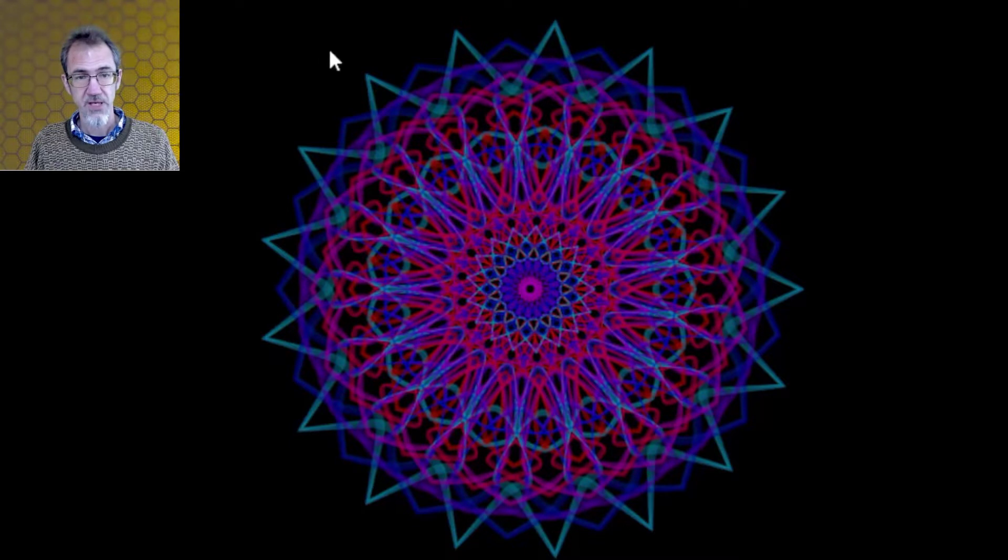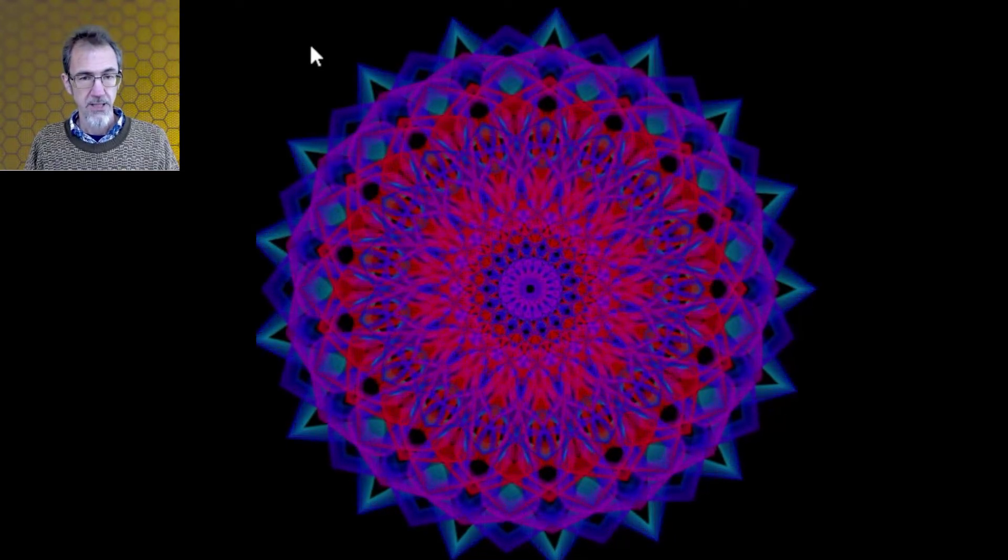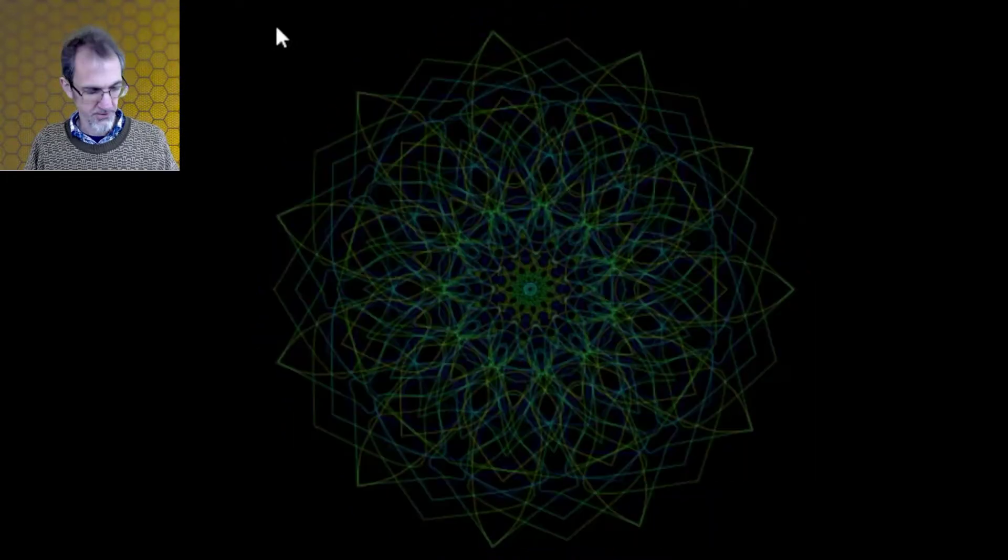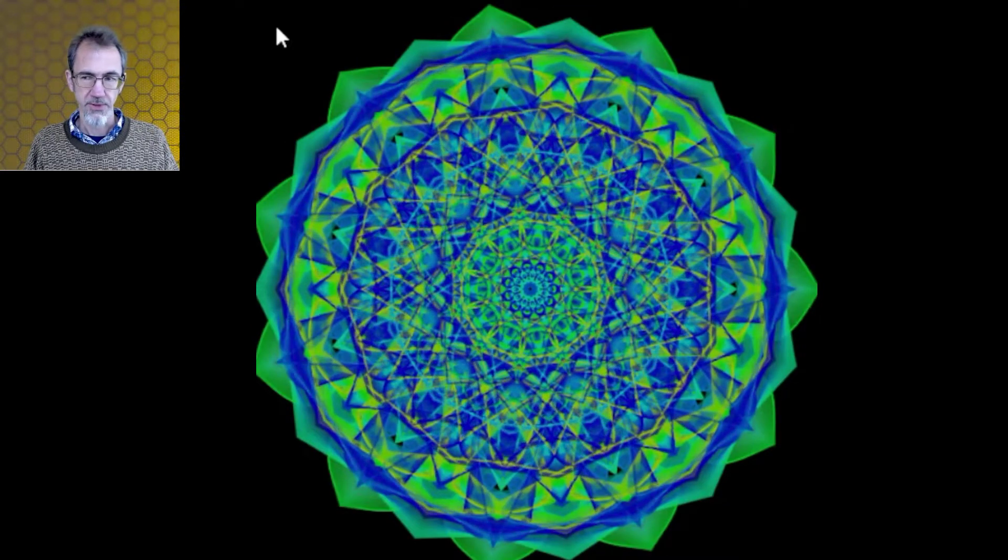And of course, as with the previous mandalas, you can click on the canvas and hit P to pause. And then S to save a JPEG. And now we have a JPEG that we can save. And then N for new art. And there we go. That's really nice.